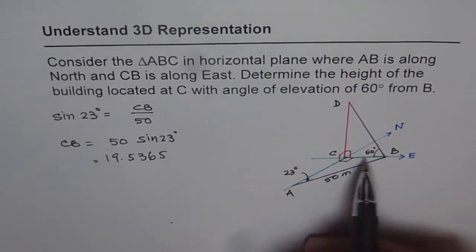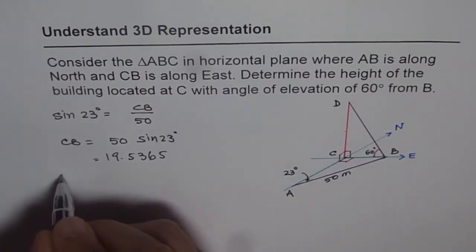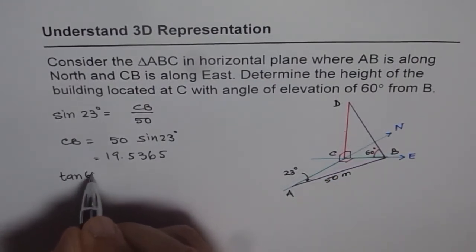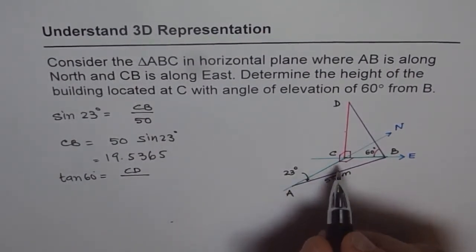We know CB, and we need to find DC. With this angle 60 degrees, noted as angle of elevation, we should use tan theta. So tan of 60 degrees is what? Tan of 60 degrees will be CD over CB.